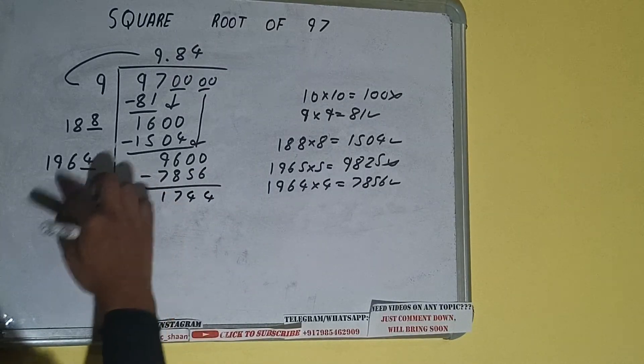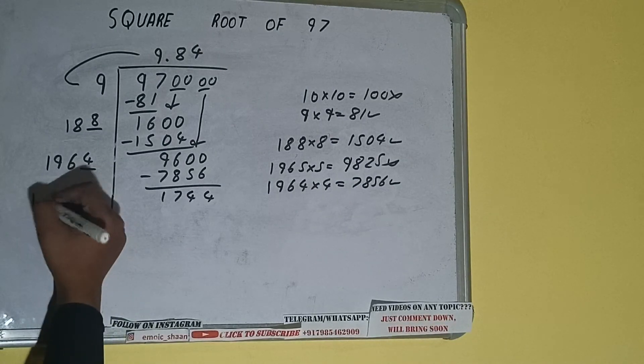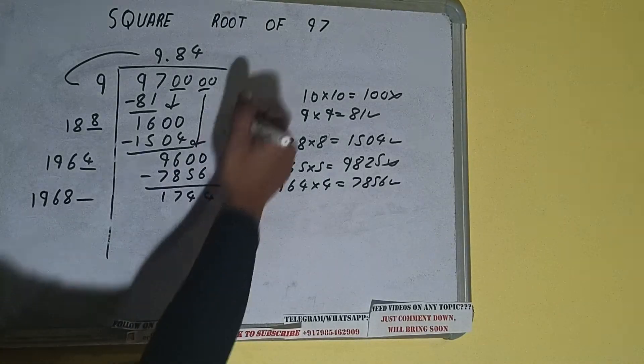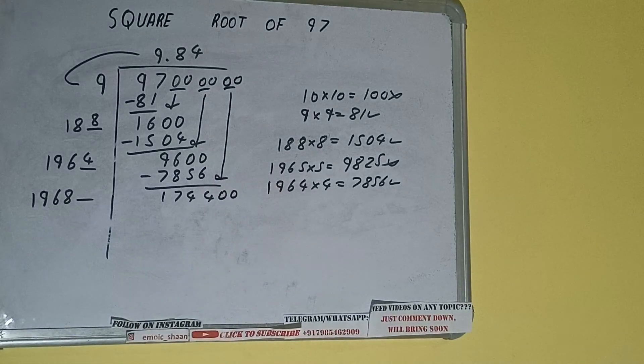Now 1964 into 4, right here. So add both. So 1964 plus 4 will be 1968, and one digit extra. And this number we need to make it big, so bring the next pair of zeros down, and it will be 174,400.